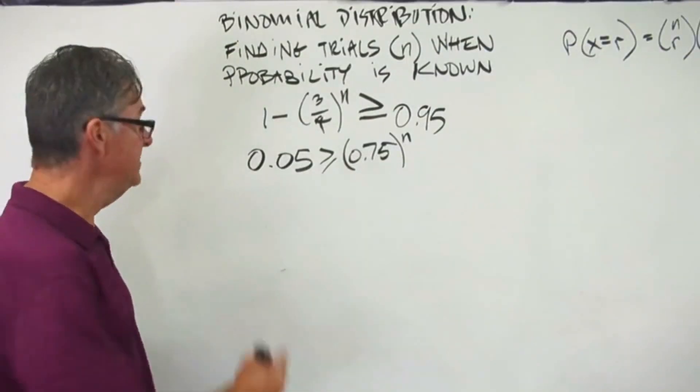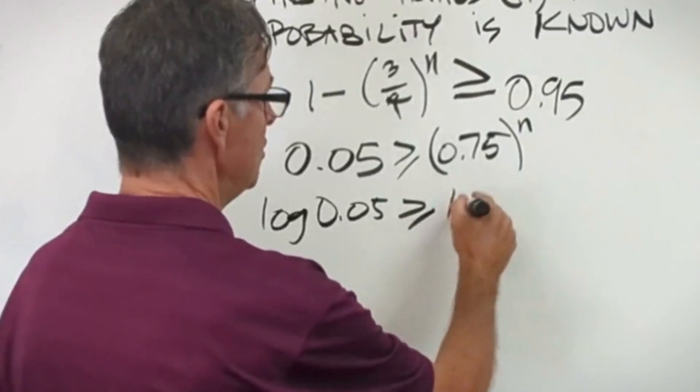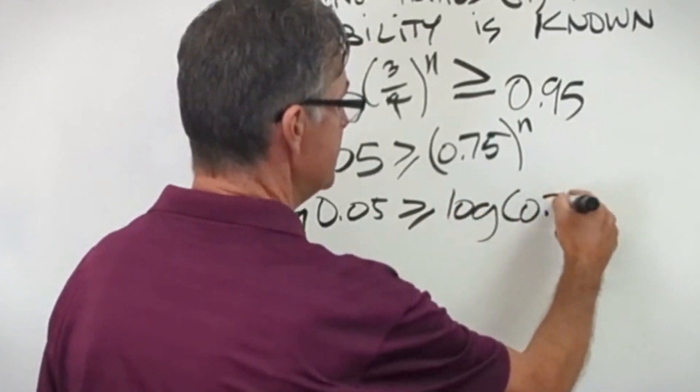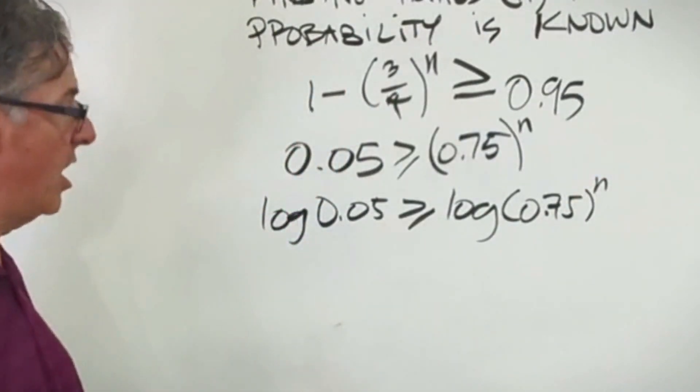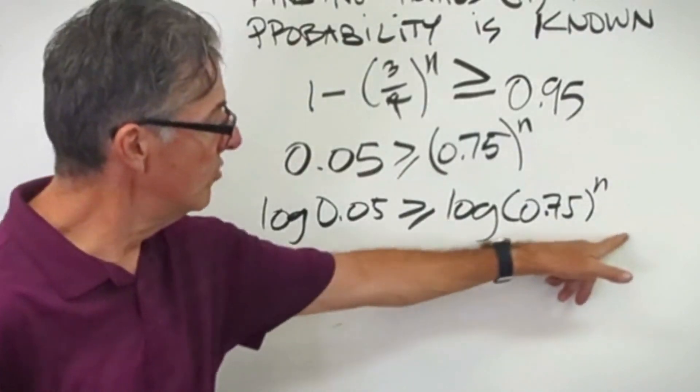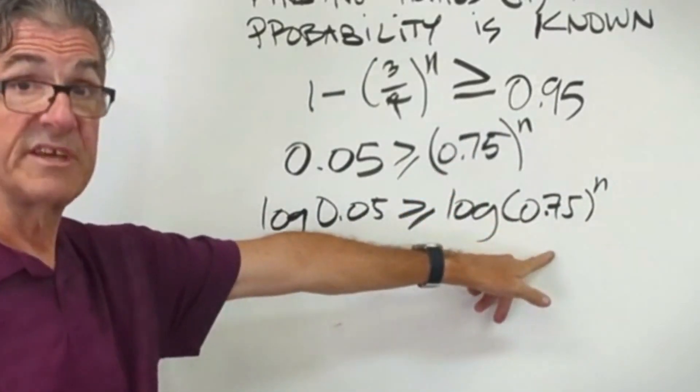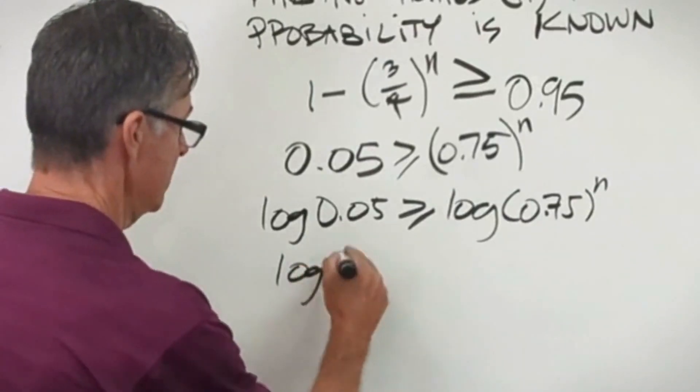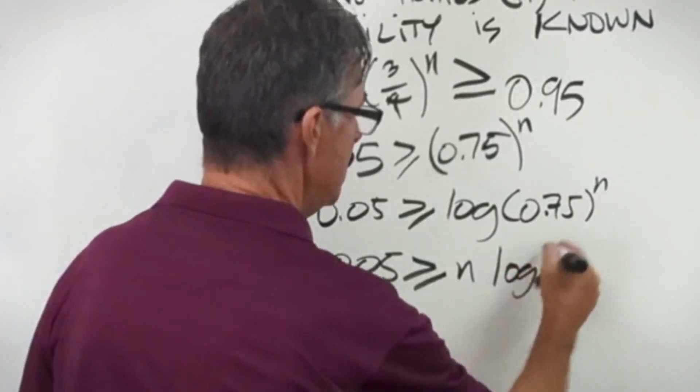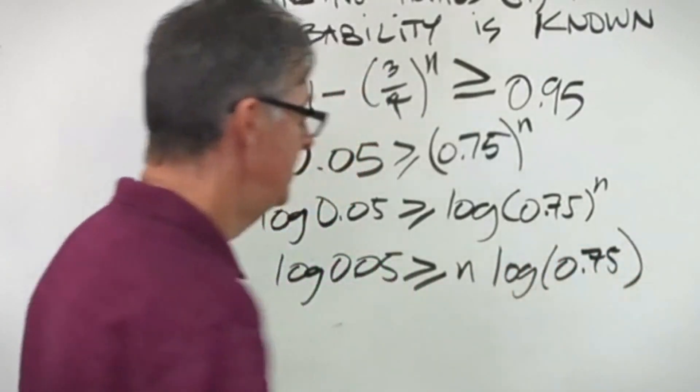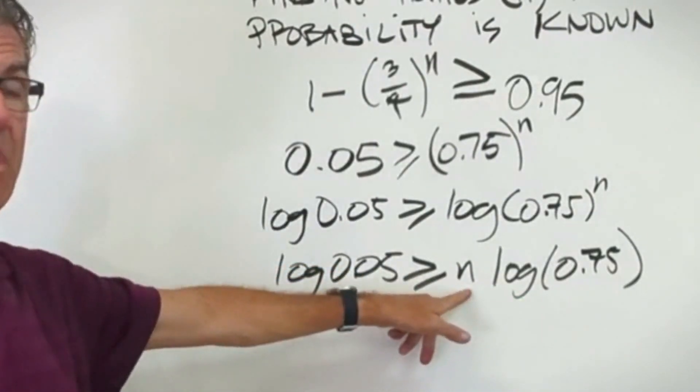I can take the log of both sides. So I can do log 0.05 greater than or equal to log of 0.75 to the n. I'm just taking the log of both sides, that's an allowed operation. Now there's a certain rule that allows me to take this n as the exponent and pull it out and make it n times log 0.75. Log 0.05 greater than or equal to n times the log of 0.75. So now I can divide through by log of 0.75 and have n alone.